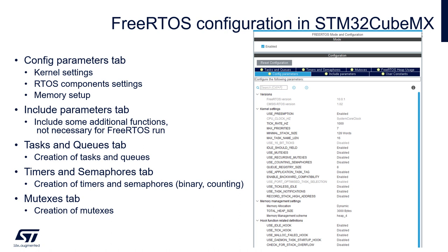The rest of the tabs are used to create OS components like tasks, queues, semaphores, mutexes, and software timers. We will not find there neither signals nor event groups. Those components need to be added manually from the code. We will focus on this point in separate sections of this training.